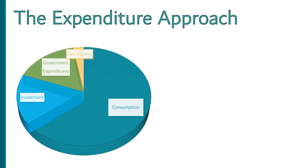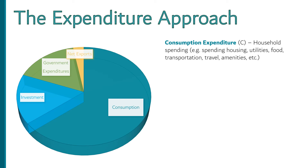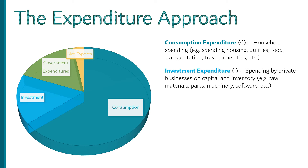Last, we have the expenditure approach. The expenditure approach is the most commonly used approach in the U.S. It breaks GDP down into four major categories of spending. Consumption spending is all private household spending on final goods and services like housing, utilities, food, transportation, travel, amenities, and things like that. Investment spending is the spending by private businesses on capital and inventory — that's stuff like raw materials, parts, machinery, software, and the rest. Remember, capital is the tools we use for production, and any inventory that a company produces but doesn't sell this year counts as well.